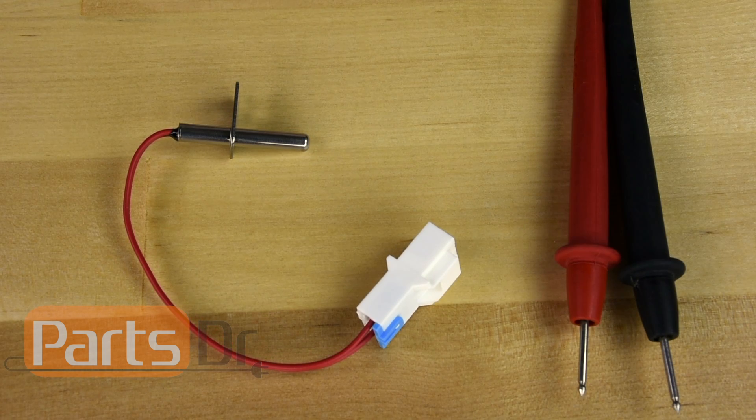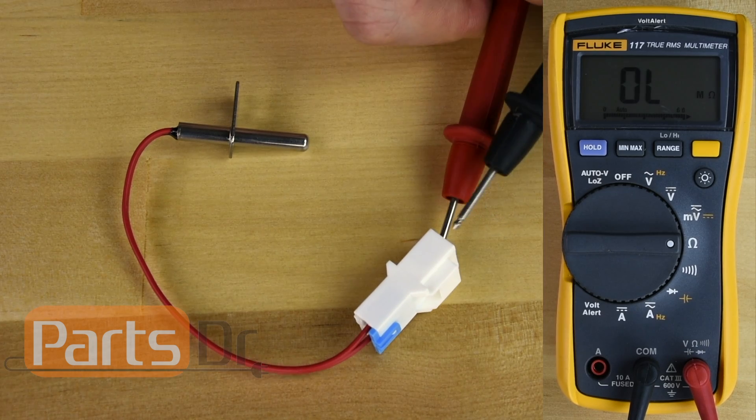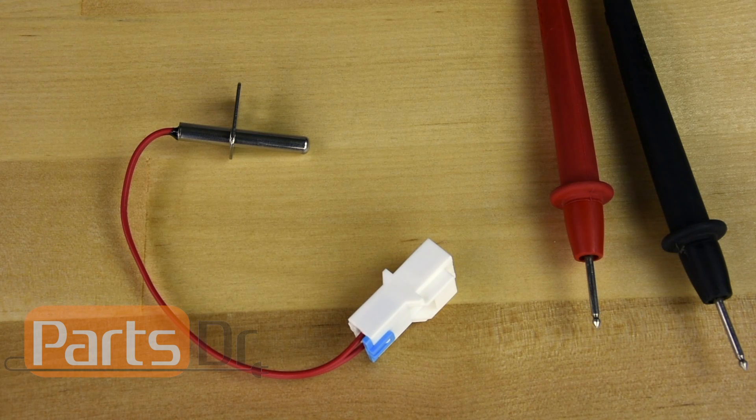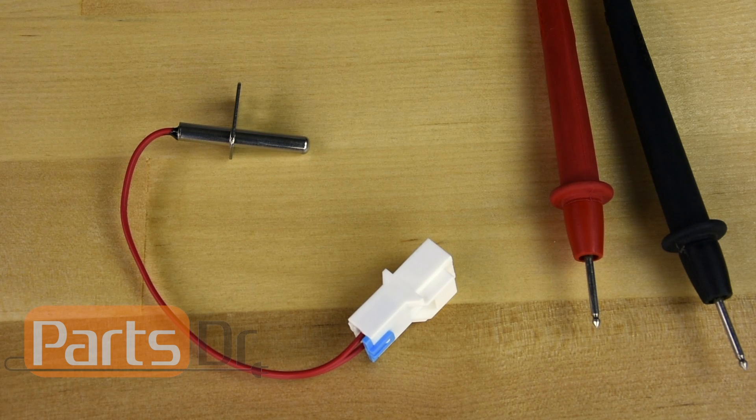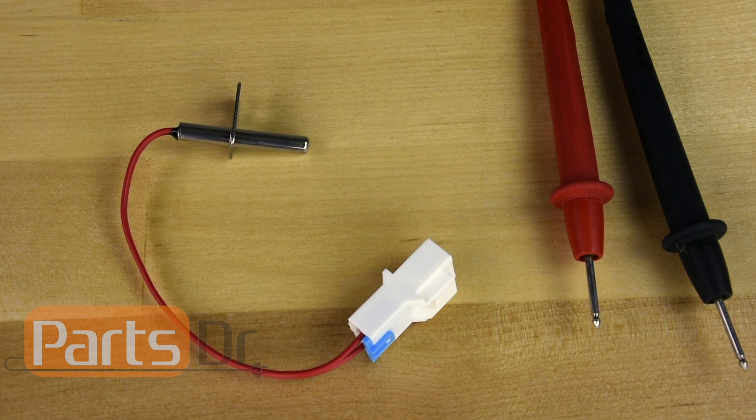Place one of each of the meter's probes on each of the thermistor's wire terminals. A good thermistor should have an ohm reading of around 11k ohms at room temperature. If your ohm reading is far higher or lower than this, then you should replace the thermistor.